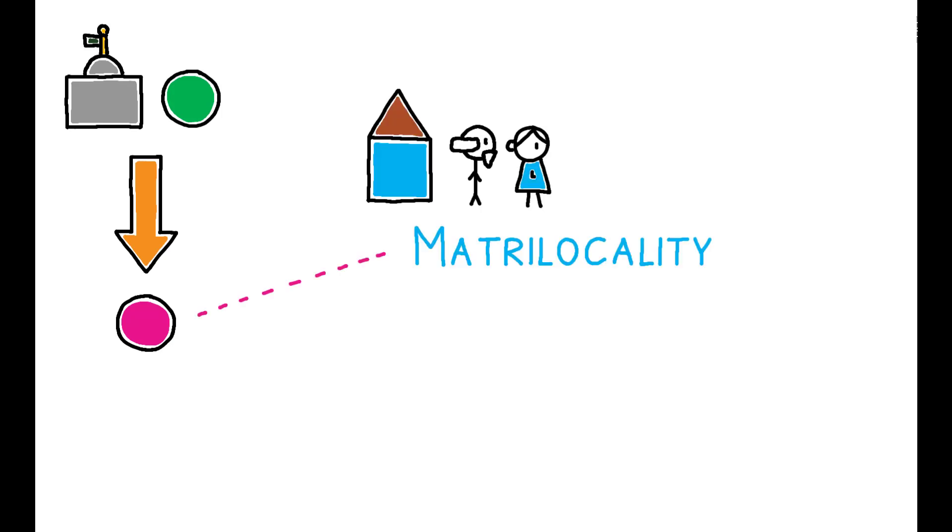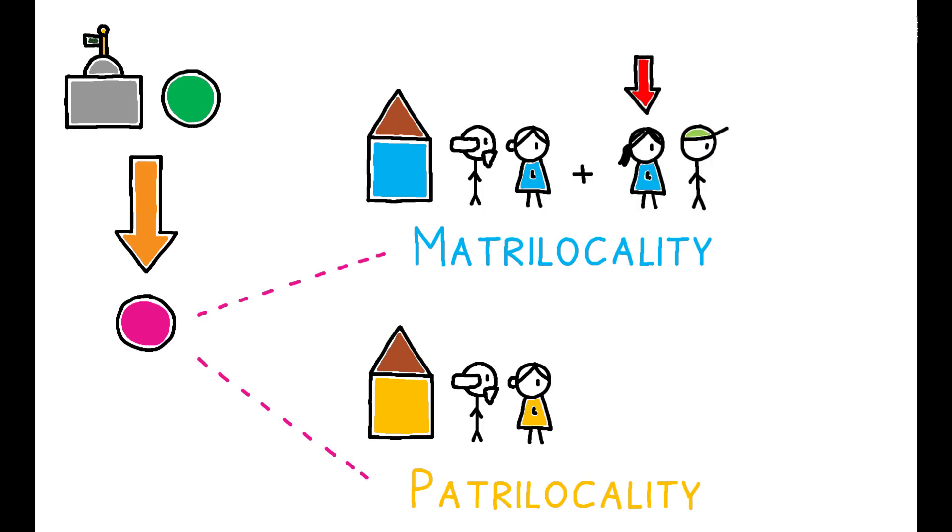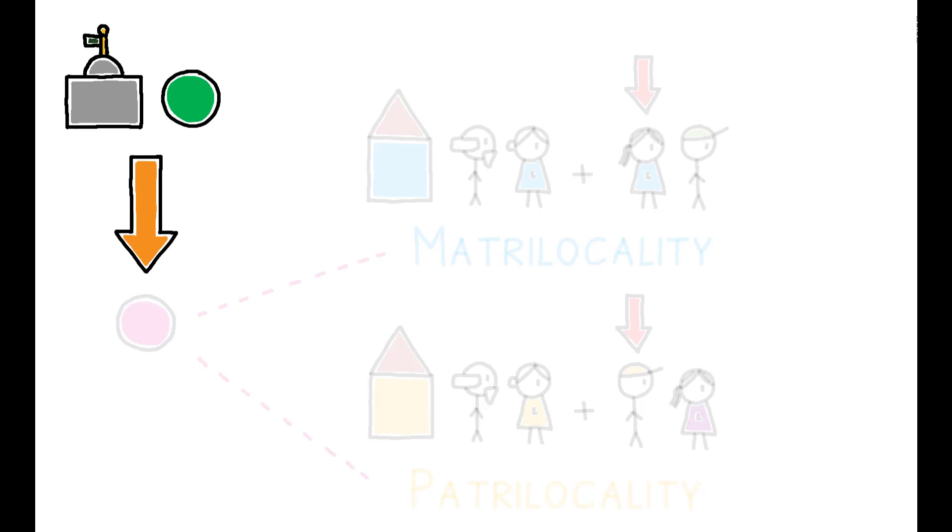This paper studies the causal relationship between policy and culture in the context of matrilocality and patrilocality. These practices determine whether daughters or sons live with their parents after marriage and have persisted for centuries among many ethnic groups. Can modern policies weaken these customs? And if so, what are the consequences?